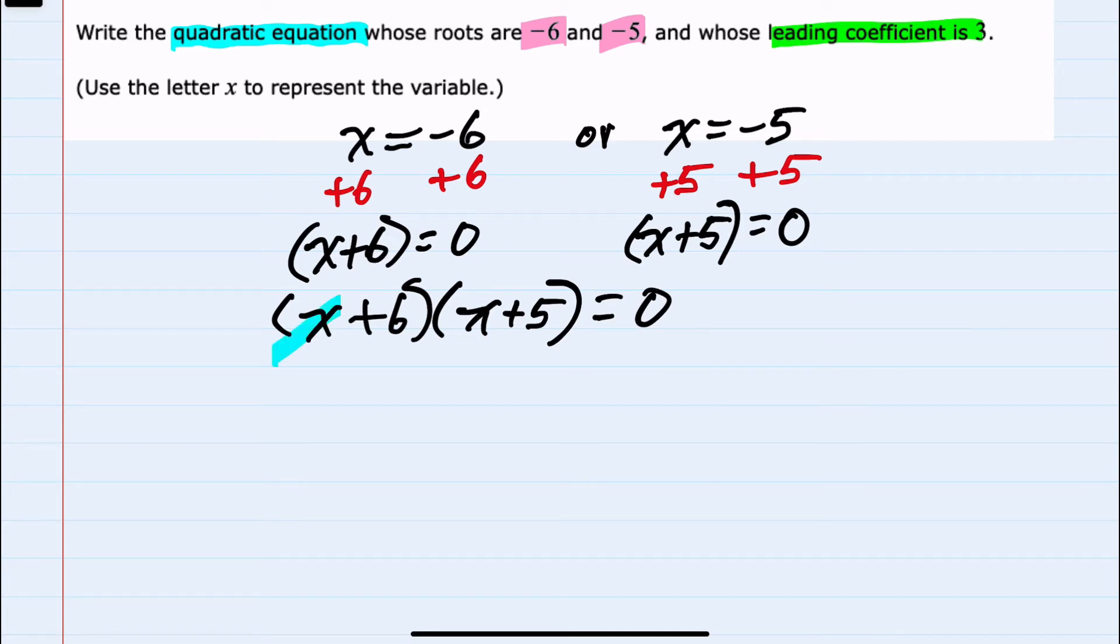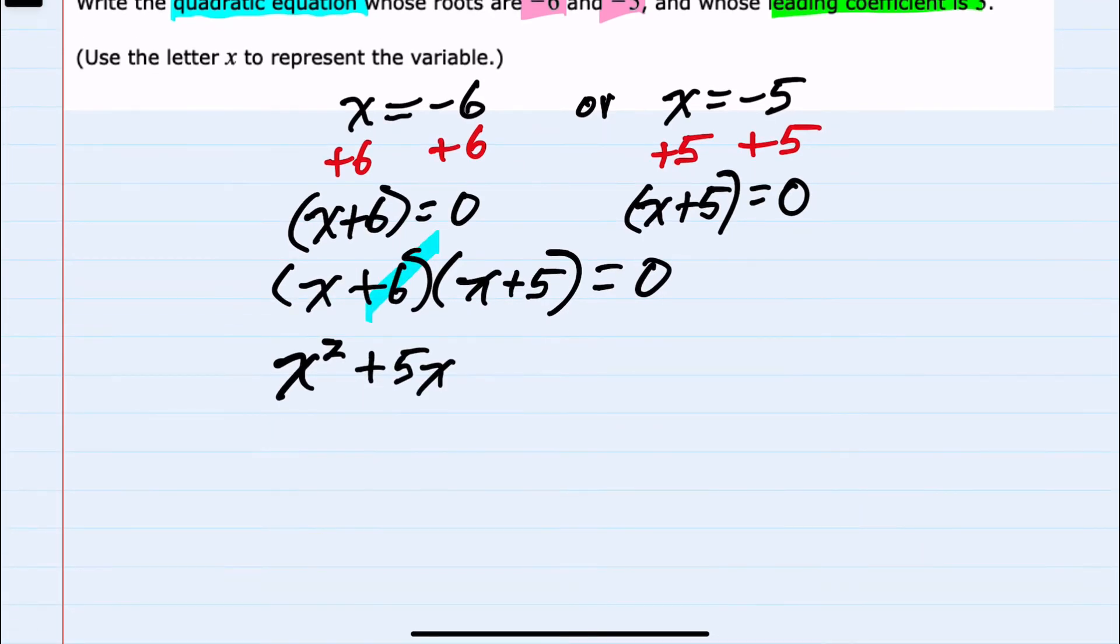We would FOIL, multiplying the first terms to give us x squared. Multiplying the outer terms would be plus 5x. Multiplying the inner terms would be plus 6x. And multiplying the last would be plus 30 equals 0.